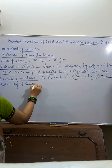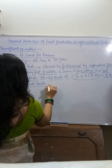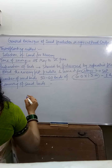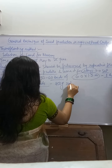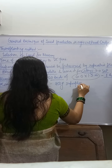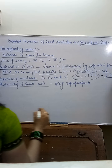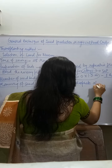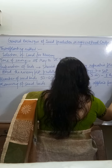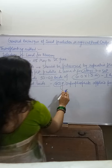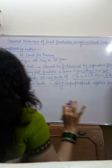Point five: manuring of seed beds. Manuring के लिए 450 gram superphosphate per bed apply करते हैं — हर bed में 450 gram superphosphate fertilizer apply किया जाता है।